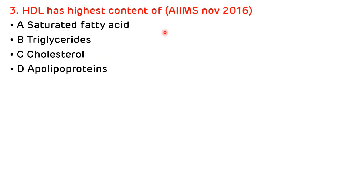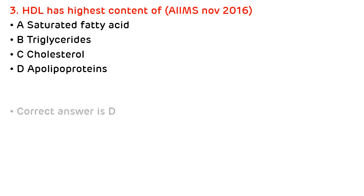Third question, asked in AIIMS November 2016: HDL has the highest content of which component — saturated fatty acid, triacylglycerol, cholesterol, or apolipoprotein? The highest content present in HDL is protein. So the correct answer is apolipoprotein, while the lowest protein content is present in chylomicron.